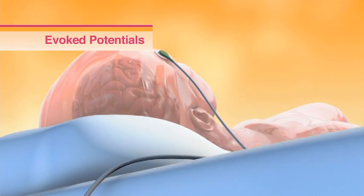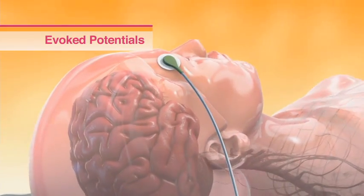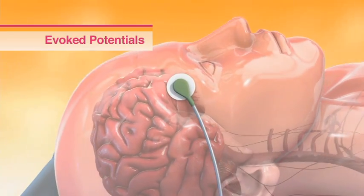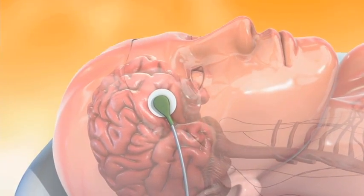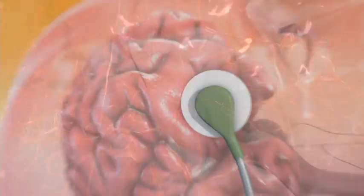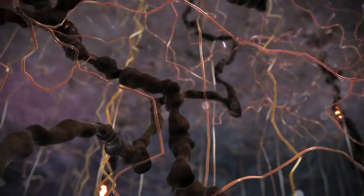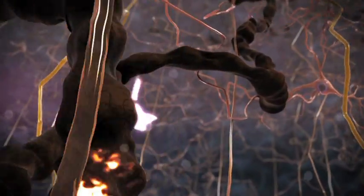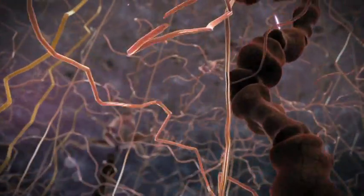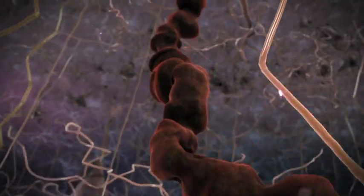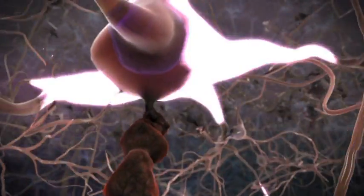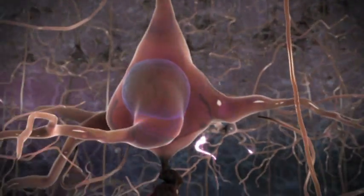Evoked potentials, or EPs, may be used to analyze the time it takes for your nervous system to respond to stimulation of the senses, such as sight or sound. If the myelin and nerve fibers in your central nervous system have been damaged, your response times may slow down. For example, visual evoked potentials can pick up a delay in electrical nerve activity along the visual pathways from the eyes to the brain.